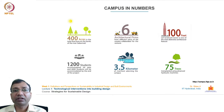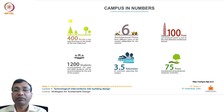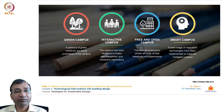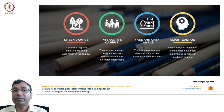Further, 3.5 kilometers of riverfront adorns the campus. They have actually transplanted 75 trees using advanced hydraulic machines so that they need not cut them down for construction — a novel approach to relocate grown-up trees from one place to another. The campus is a green campus with a plethora of green initiatives. It is an interactive campus designed to foster interdisciplinary and inter-batch interactions, a free and open campus where the institute philosophy allows all kinds of new initiatives, and a smart campus where a wide range of innovative technologies have been implemented.